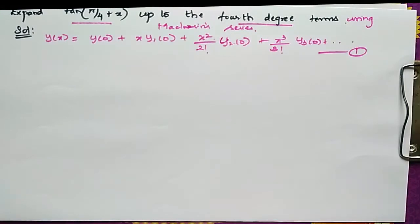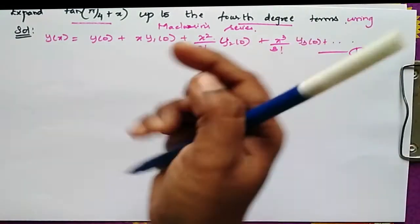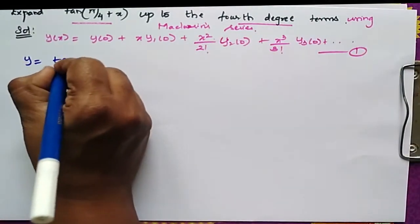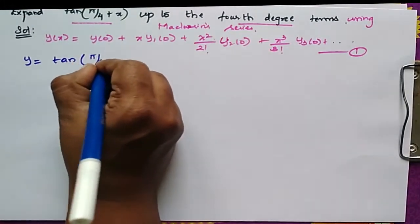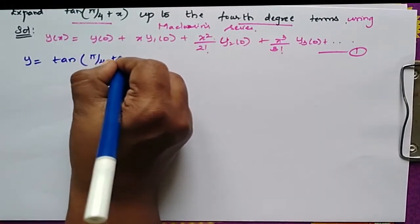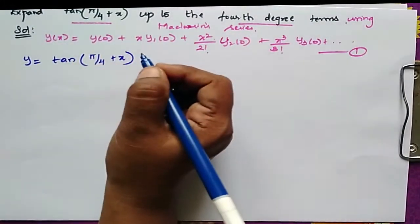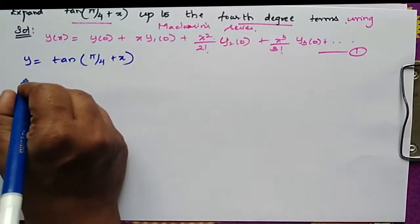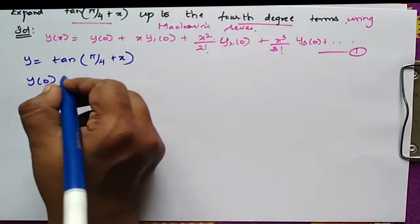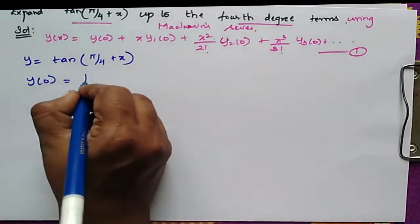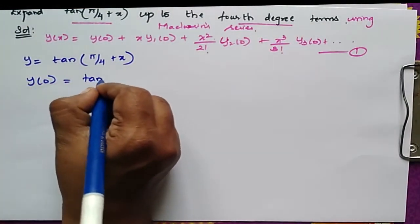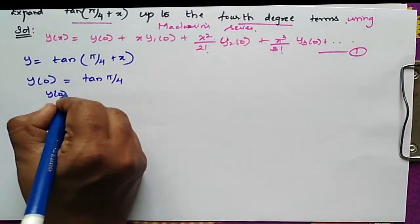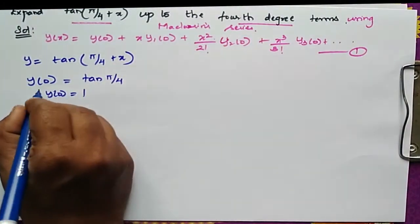Let y = tan(π/4 + x). Now find y(0): substituting x = 0, y(0) = tan(π/4) = 1.